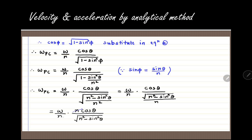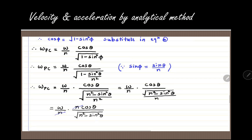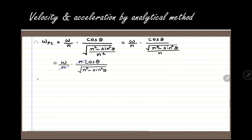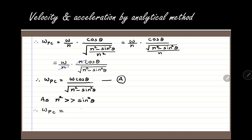Simplifying further by cancelling N from numerator and denominator, the expression for angular velocity of the connecting rod becomes omega PC equals omega cos theta divided by square root of N squared minus sin squared theta. Since N squared is very large compared to sin squared theta, we can neglect that term, giving the simplified form: omega PC equals omega cos theta divided by N.